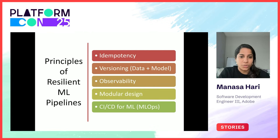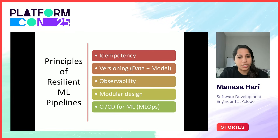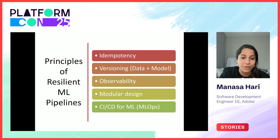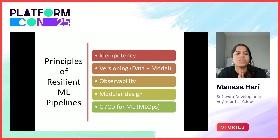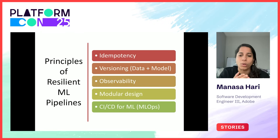To build resilient pipelines, we apply proven software engineering principles. One: idempotency — ensures repeated runs produce the same result. Two: versioning — gives us reproducibility across data, code, and models. Three: observability — lets us monitor system health with metrics and logs. And four: modularity — allows us to test easily and roll back if anything is failing. Think of your pipeline as a distributed system. It needs testing, validation, and monitoring.